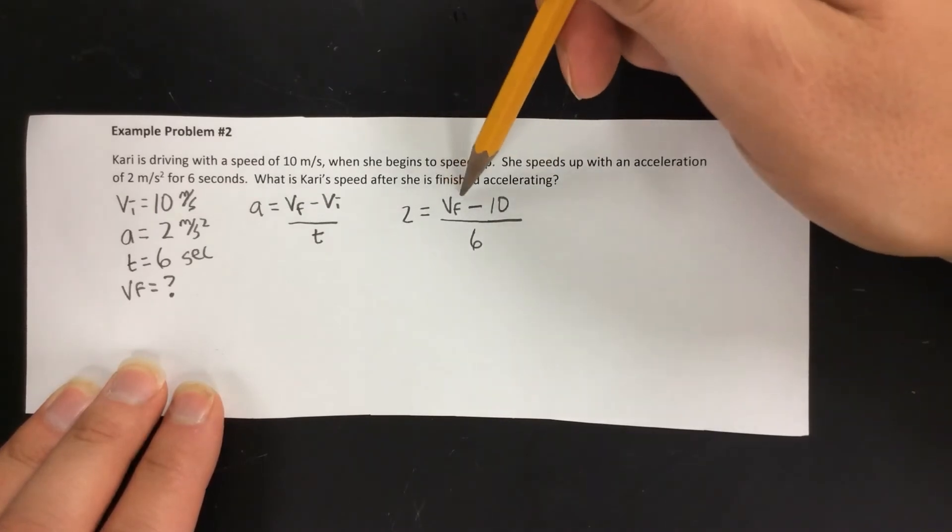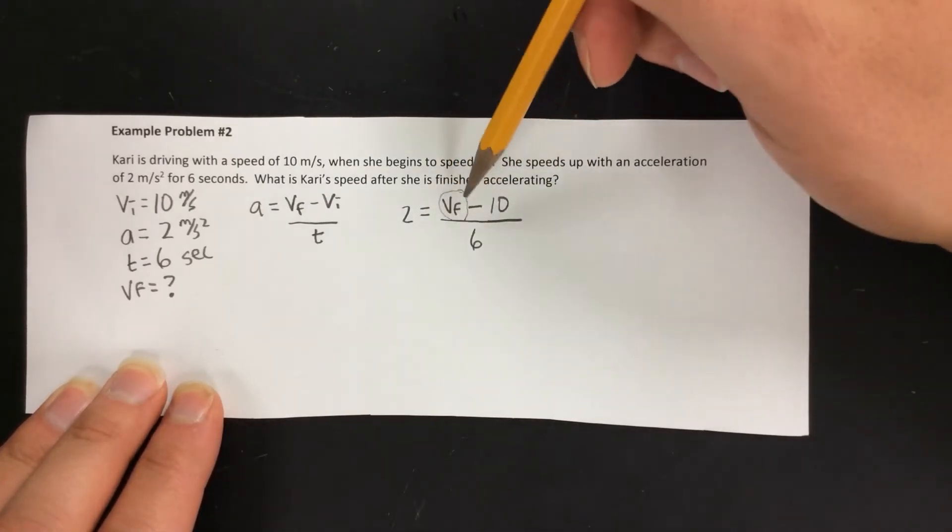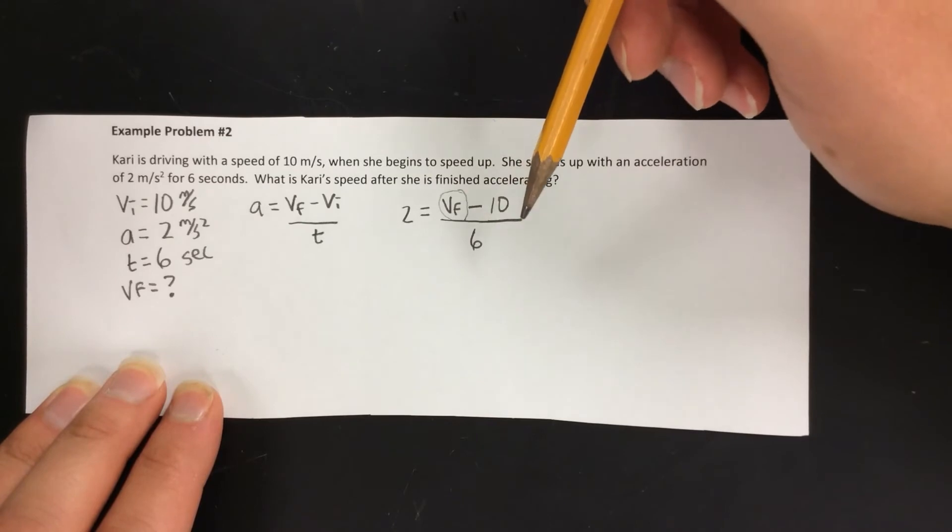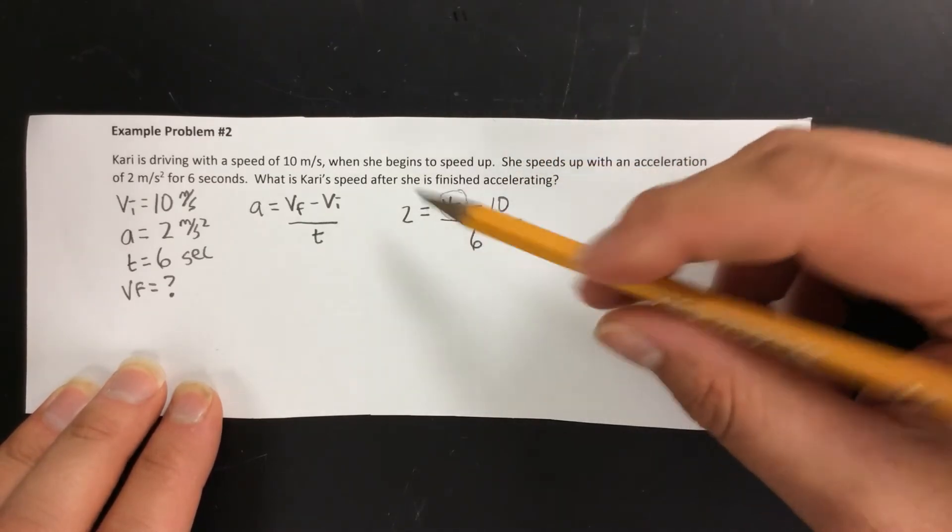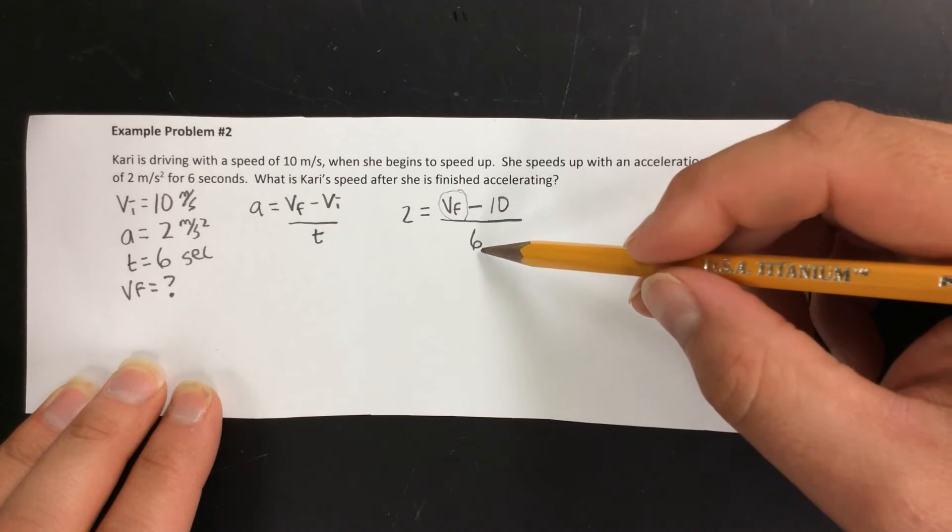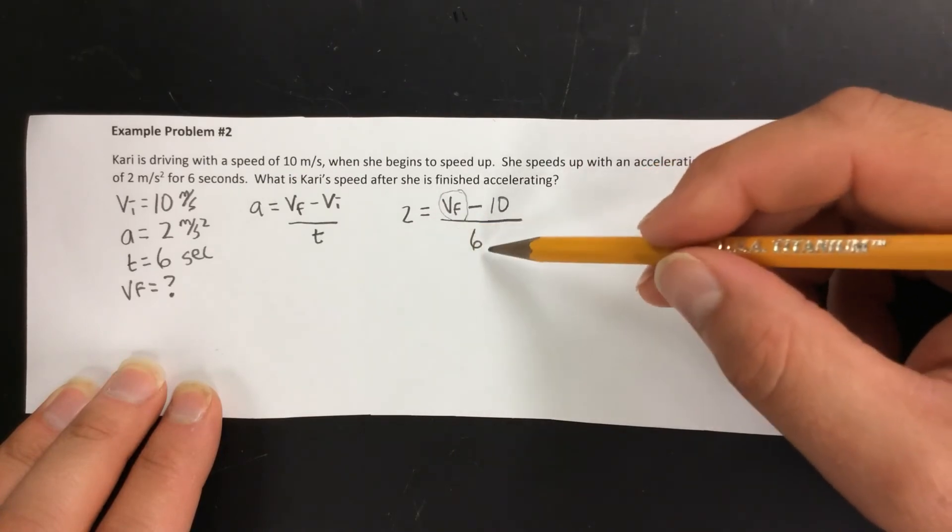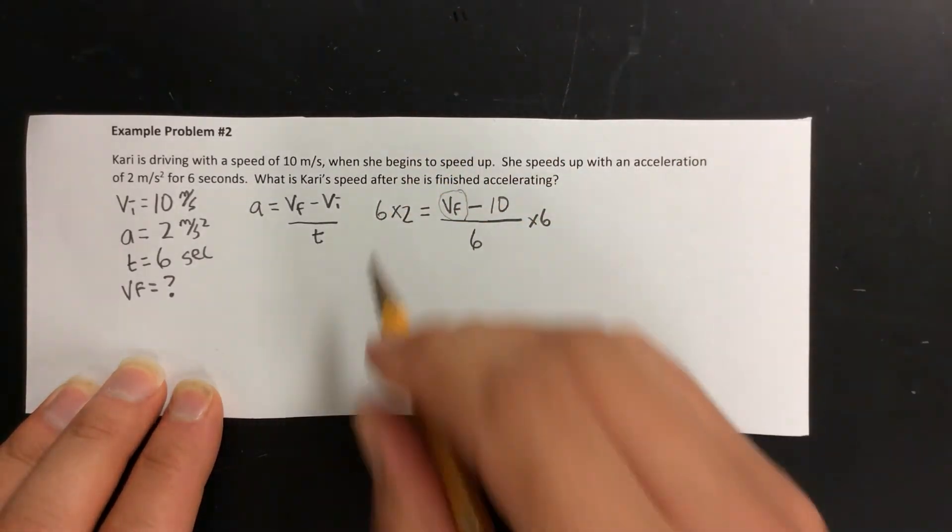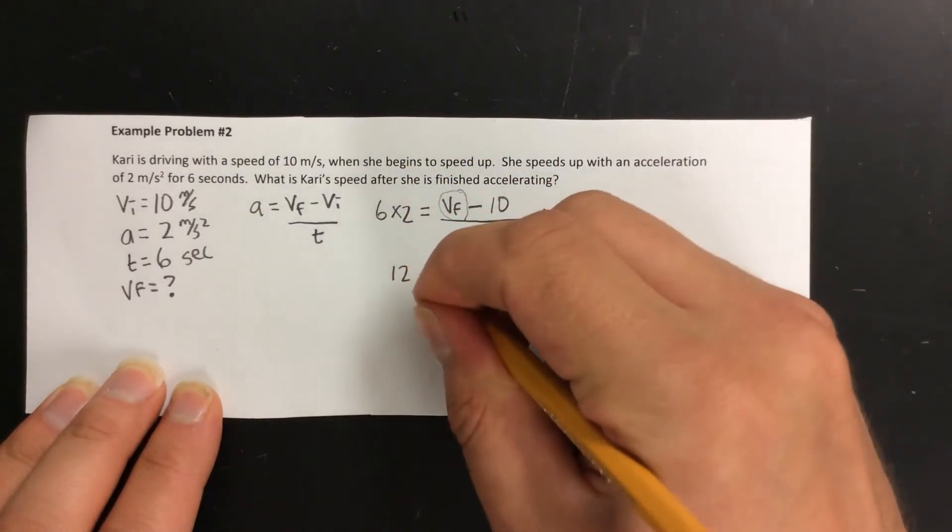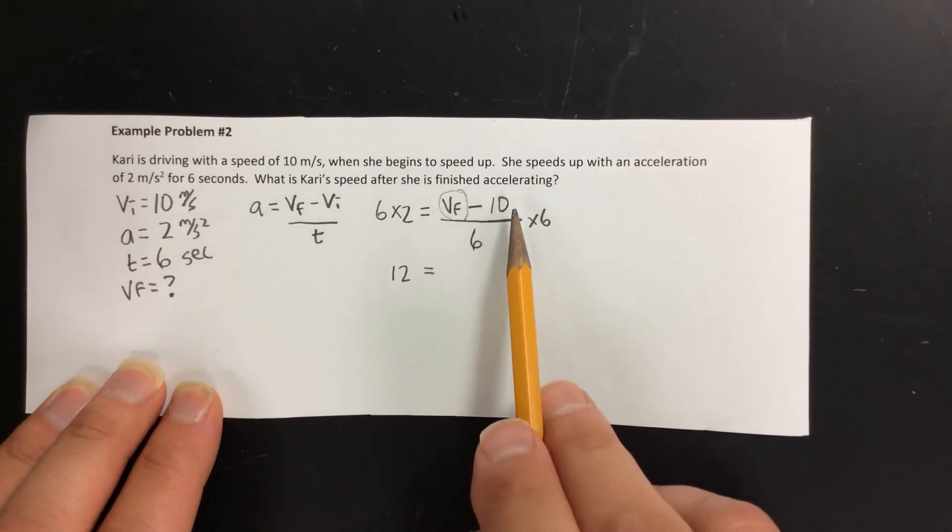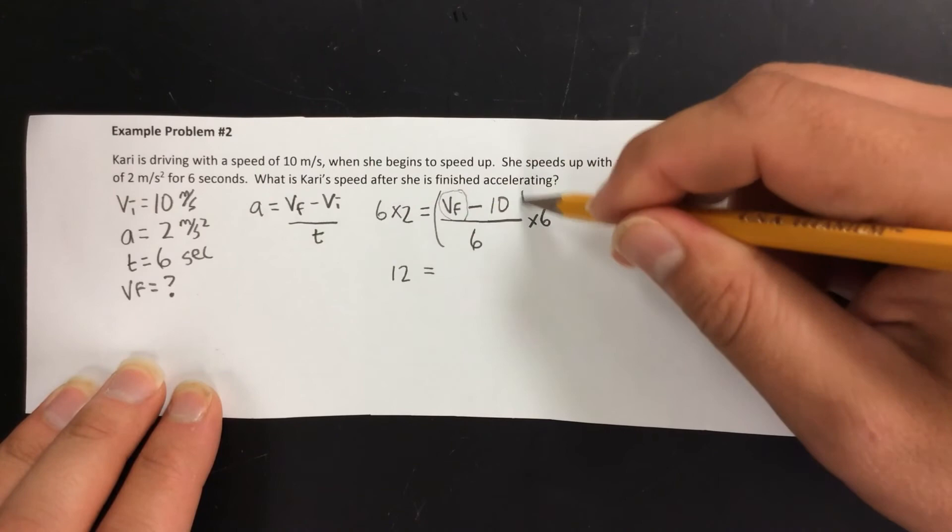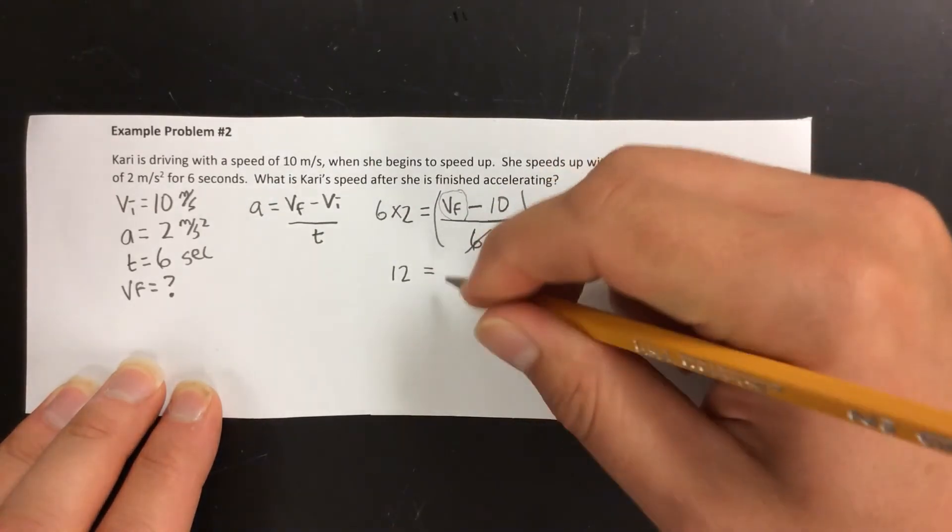Now for the fourth step we want to get the VF all by itself. Think of it like the x in math class. You want to get it all by itself. First thing is that it's part of a fraction. That's not very good. So we need to do something on both sides to get rid of this fraction. Well since this fraction is all over 6 we're going to multiply both sides by 6. Well 6 times 2 gives us 12. And VF minus 10 all over 6 all times 6 will just give us VF minus 10.